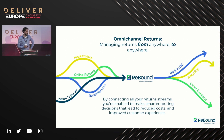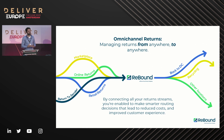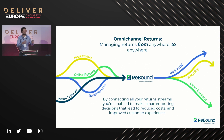And once we've received it, why are certain channels always routed back to your fulfillment center that is not ready to receive those returns? Why is it not dispositioned in different ways? Why are we not using data to ship the item back to its next best destination instead of just a standard one? Once in a Rebound hub, we can use the data to sort and disposition products differently.